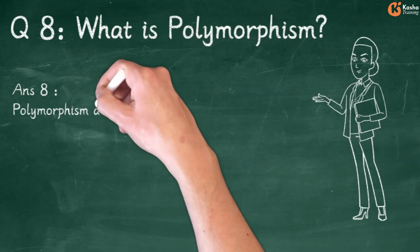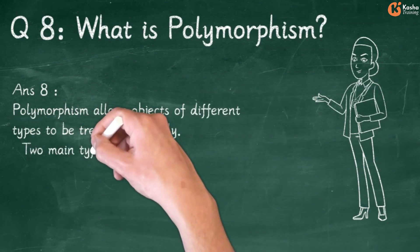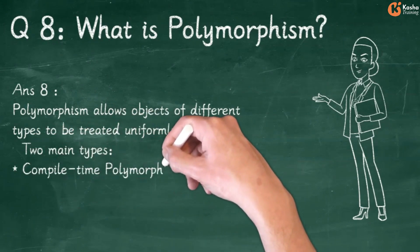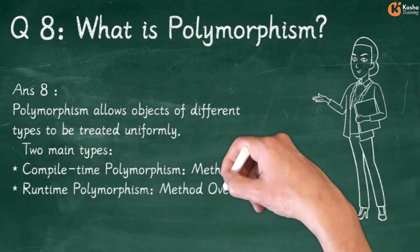Answer 8: Polymorphism allows objects of different types to be treated uniformly. Two main types: Compile Time Polymorphism through Method Overloading, and Runtime Polymorphism through Method Overriding.